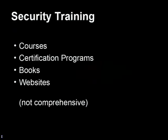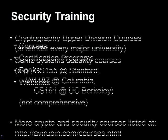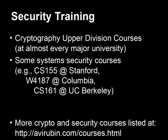To summarize, let me tell you where you can learn more — courses, certification programs, et cetera. You can learn more about security at every major university. A lot of good universities, in addition to cryptography courses, are now introducing system security courses: CS-155 at Stanford, W4187 at Columbia, CS-161 at Berkeley. There's a much more comprehensive list at Avi Rubin's website.